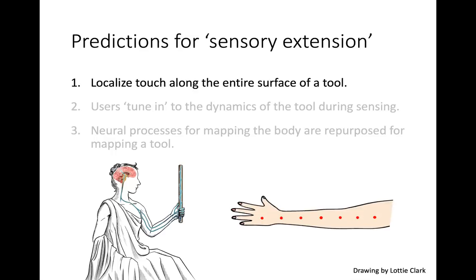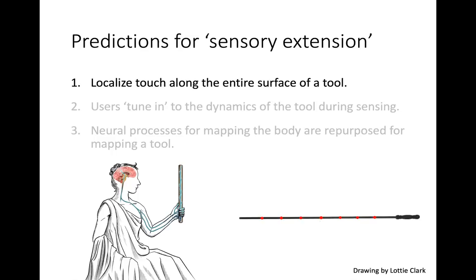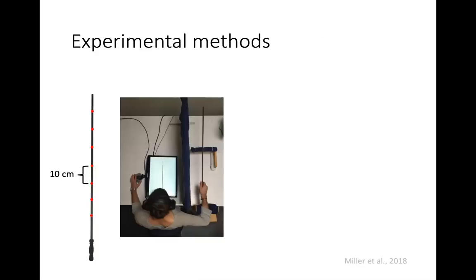We developed a behavioral paradigm to address the first issue about localizing touch along the entire surface. We took a paradigm used for tactile localization along the body and applied it to localizing touches along the entire surface of a tool. Participants sat at a table in front of a computer screen showing a drawing of the tool they held in their right hand behind an occluding board, and an object was placed at one of seven different locations along the length of the tool.